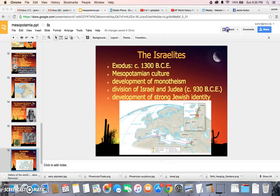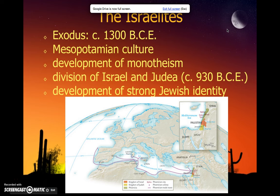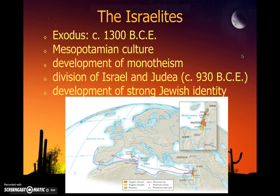Alright, so we're almost finished here, just a few more people of Mesopotamia. We basically finished talking about the Israelites in the last video, but one other thing I wanted to mention with regard to the two different kingdoms of Israel. The northern kingdom, as you can see here on the map, is the kingdom of Israel — that's going to be conquered by the Assyrians in 722 BCE.